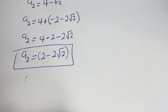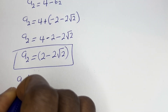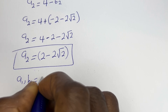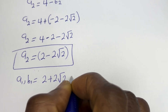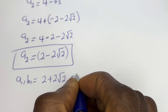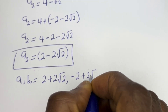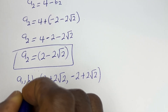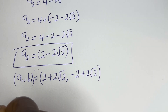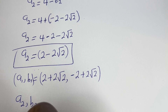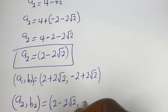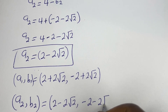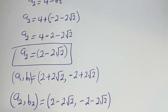Therefore, our final answers are: (a₁, b₁) equals (2 plus 2 root 2, minus 2 plus 2 root 2), and (a₂, b₂) equals (2 minus 2 root 2, minus 2 minus 2 root 2). These are the final answers.